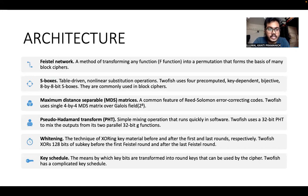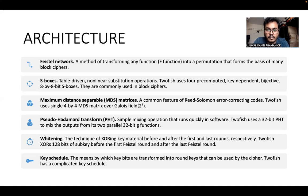Regarding the architecture, a Feistel network is used. S-boxes are present — each S-box takes 8 bits input and gives 8 bits output. Maximum Distance Separable (MDS) matrix is also used. A Pseudo-Hadamard Transform (PHT) is used as well. Whitening is performed — whenever input plaintext is taken or output ciphertext is given, it is XORed with a 128-bit sub-key.